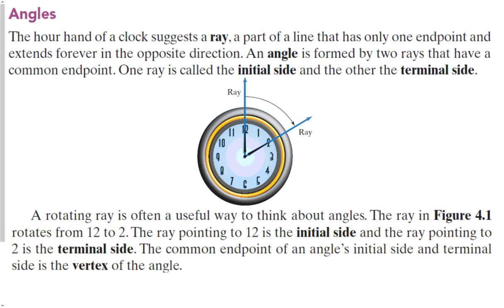In trigonometry, all of our angles are going to have some sort of direction — they're going to go from one spot to another spot. Where the angle starts is called the initial side, and the other side is called the terminal side. A rotating ray is a useful way to think about angles, as we go from the first ray to the second ray. In the figure, the ray rotates from 12 to 2. The ray pointing to 12 is the initial side, the ray pointing to 2 is the terminal side, and the endpoint in the middle is called the vertex of the angle.